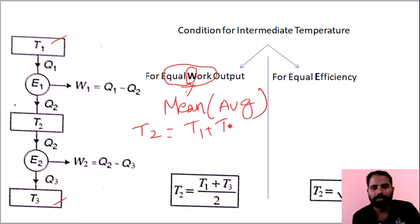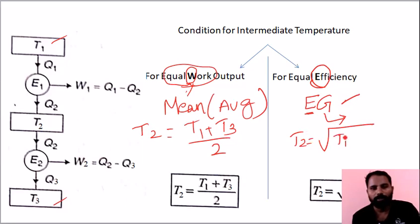T2 equals T1 plus T3 divided by 2. The second condition is equal efficiency. Use the shortcut EG - efficiency equals geometric mean. T2 equals the square root of T1 times T3. Remember: efficiency uses geometric mean, work output uses arithmetic mean.